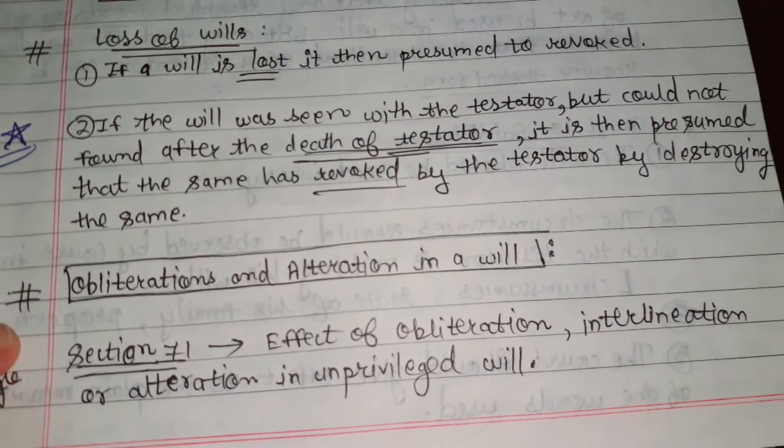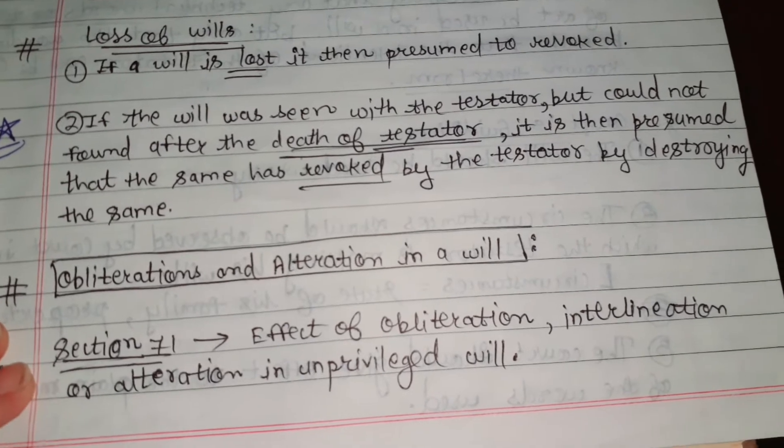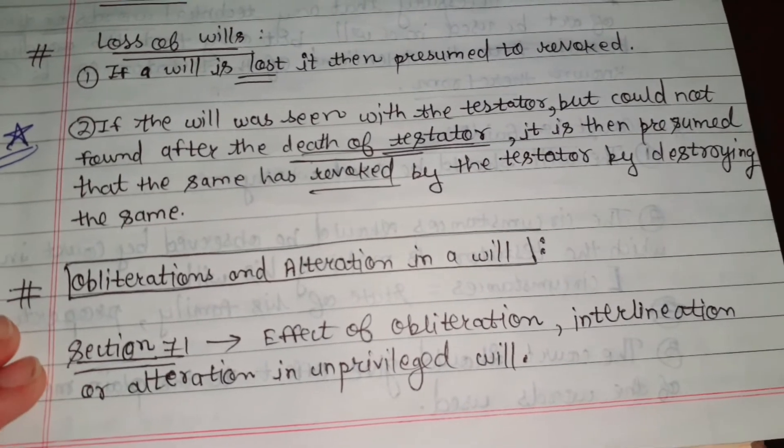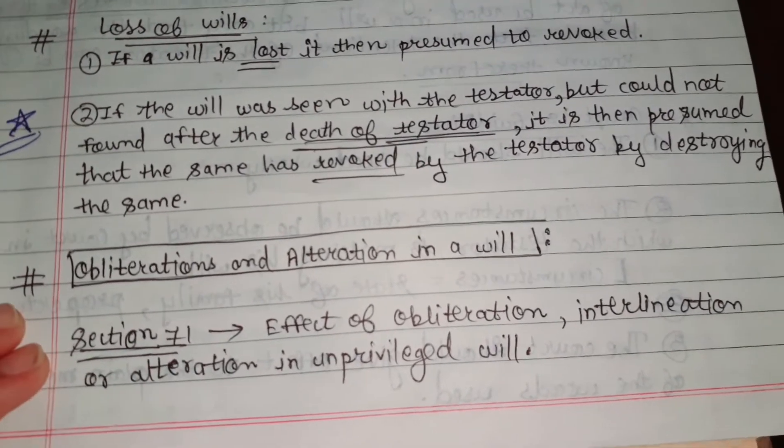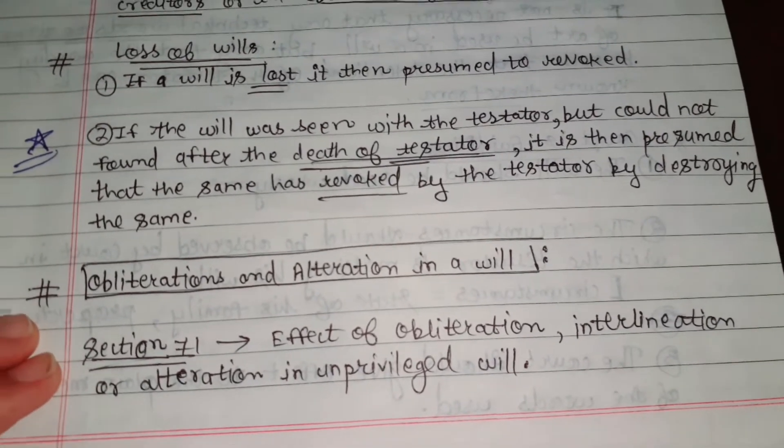Section 71 covers the effect of obliteration, interlineation, or alteration in an unprivileged will.